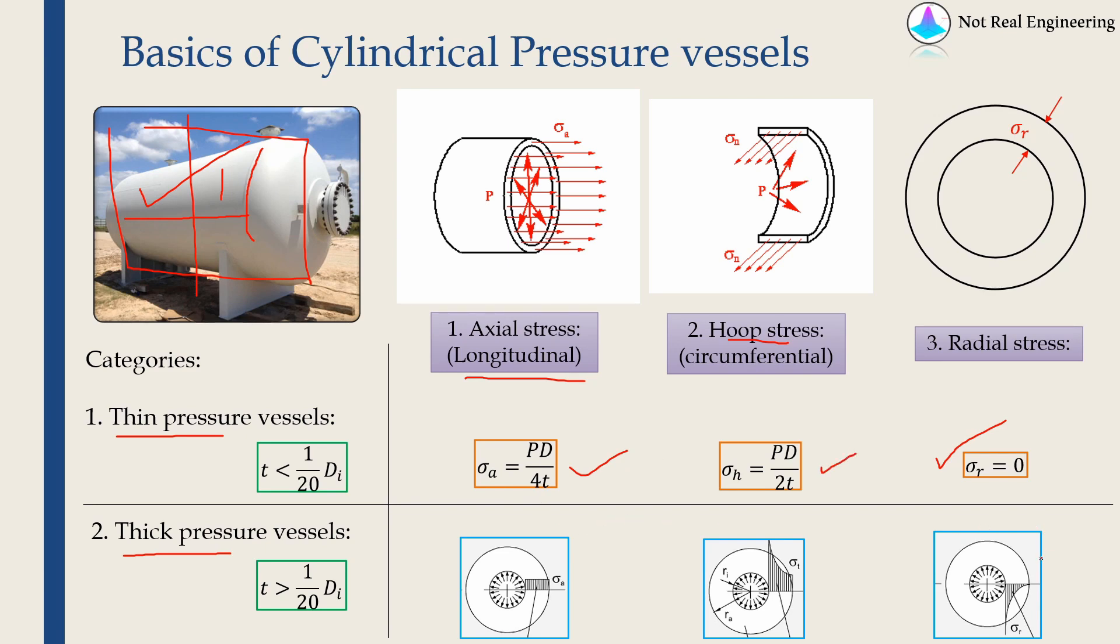But for thick pressure vessels, the radial stress will not be zero. And also this hoop stress and radial stress, they will not be constant over thickness. As you can see over here, the hoop stress changes as you go along the thickness of the cylinder. At the innermost point, hoop stress is maximum, and at the outermost point, it is minimum.